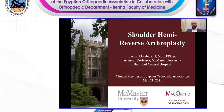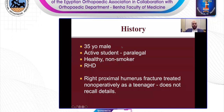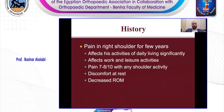This is a case of a 35-year-old male, active student and paralegal, healthy, non-smoker, right-hand dominant. As a teenager, he had a proximal humerus fracture treated non-operatively. He has been having pain in the right shoulder for the last number of years, affecting his daily activity as well as work and leisure. He has seven to eight out of 10 pain with any shoulder motion or activity, discomfort at rest, and decreased range of motion. Physical examination demonstrates 70 degrees of forward elevation, 70 of abduction, 25 degrees external rotation, and internal rotation to the sacrum — significantly decreased compared to the contralateral side. His rotator cuff strength is normal, with a negative belly press test and painful arc of motion.